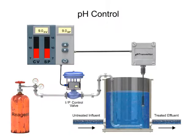Accurately applying the correct amount of reagent to an acid or base solution can be challenging due to the logarithmic characteristics of pH reaction in a solution. Implementing a closed-loop control system maintains the pH level within a certain range and minimizes the degree to which the solution becomes acidic or alkaline.